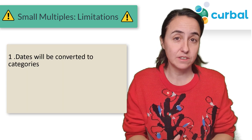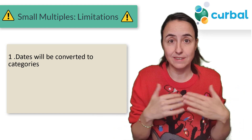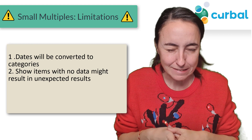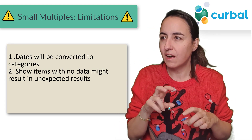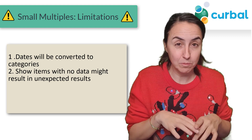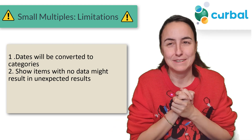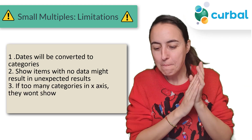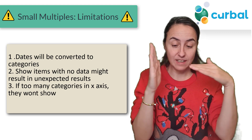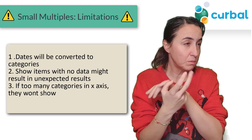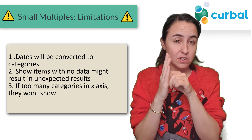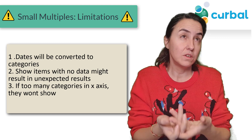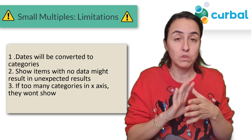Limitations: dates will be converted to a category called 'axis,' which basically means dates are not fully supported. 'Show items with no data' might result in unexpected results, so be careful with that — use another visual if needed. Also, if you have too many categories on the x-axis, they will not show. You'll get a scroll bar up to a defined number of items, and beyond that they just won't show. There's no 'load more' option for now, so don't use it with too many categories as it could be misleading.